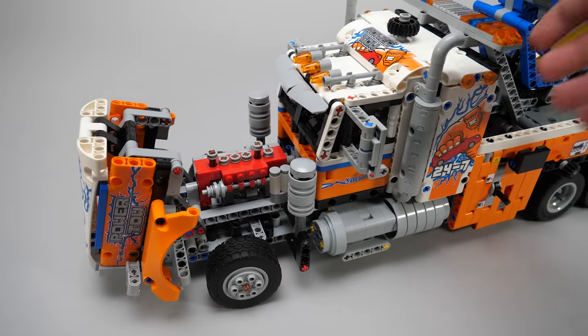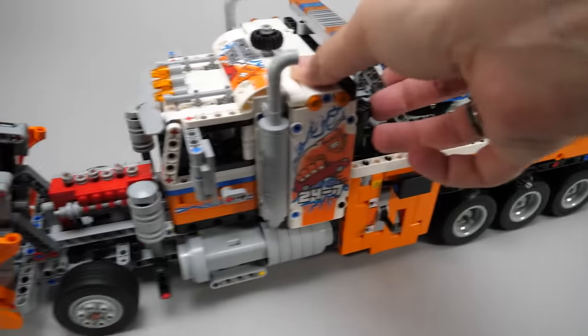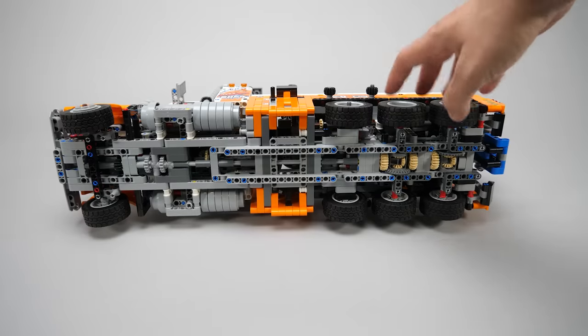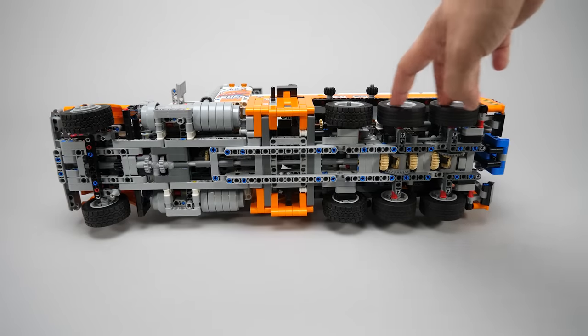The hood opens. There's a functional 6 cylinder inline engine underneath with some nice details. The engine is driven by the rear 2 axles through differentials.